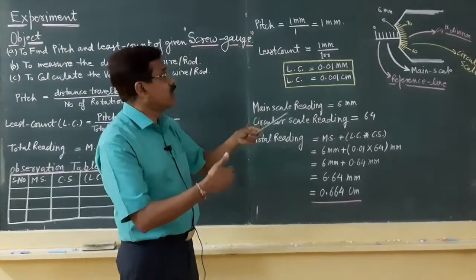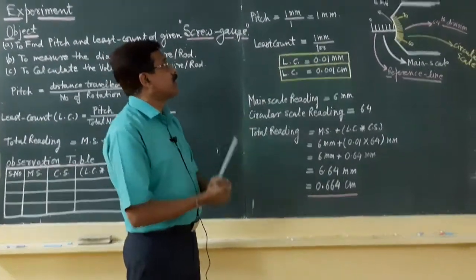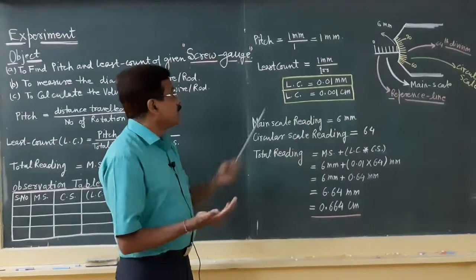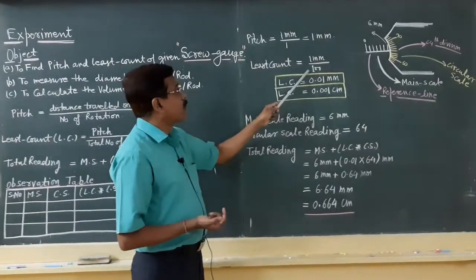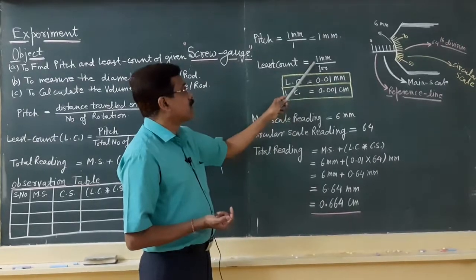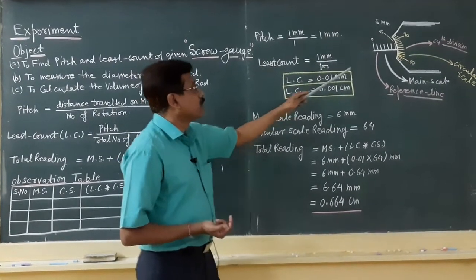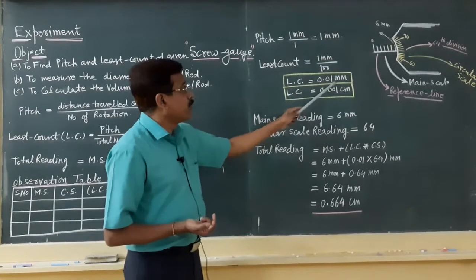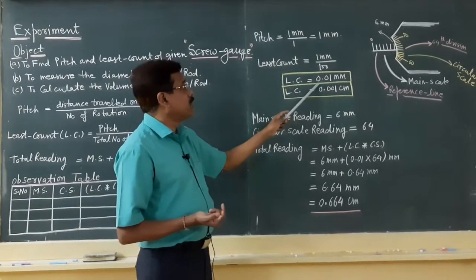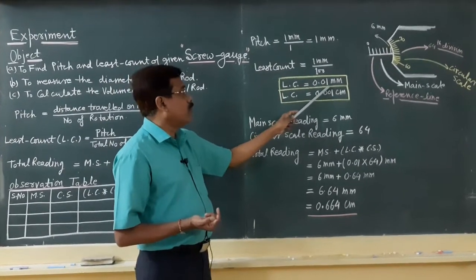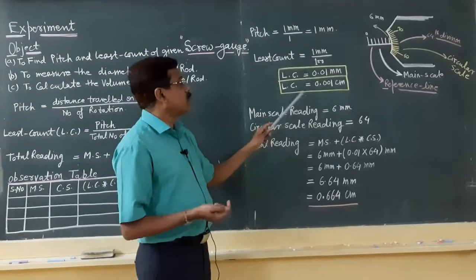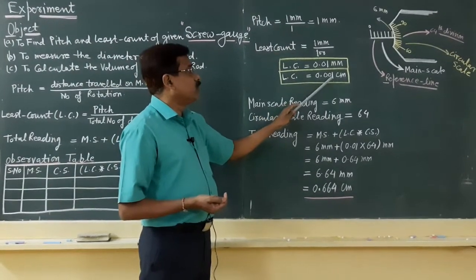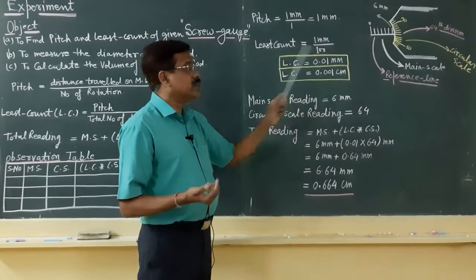For every rotation, the distance travelled on the main scale is 1 mm. The least count is pitch divided by total divisions: 1 mm divided by 100, so the least count is 0.01 millimeter, or equivalently 0.001 centimeter.